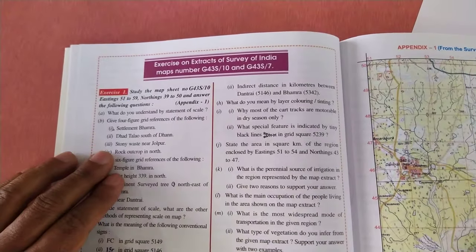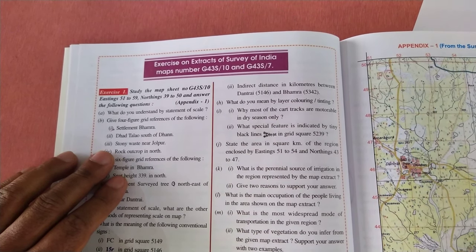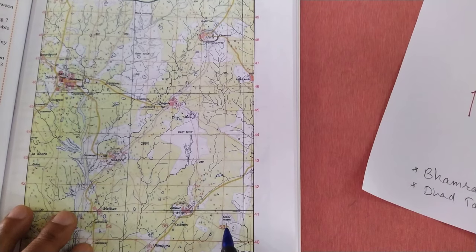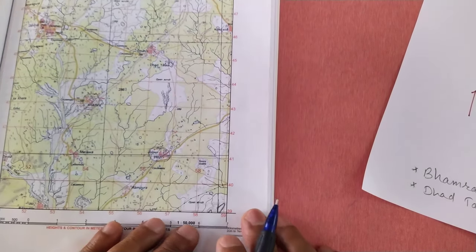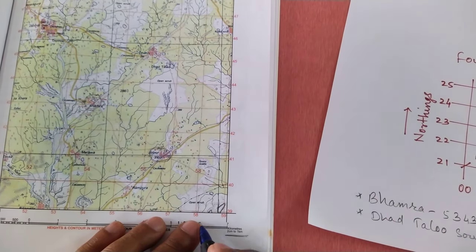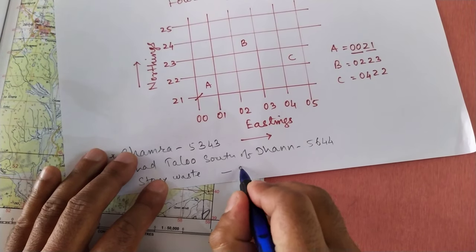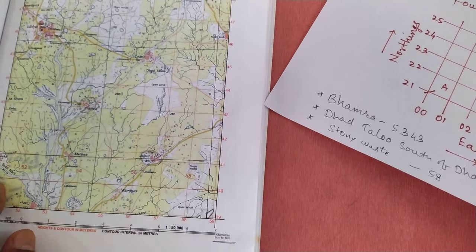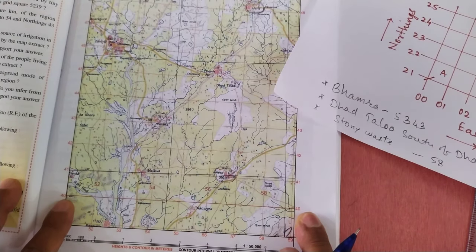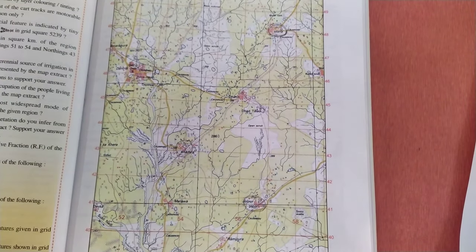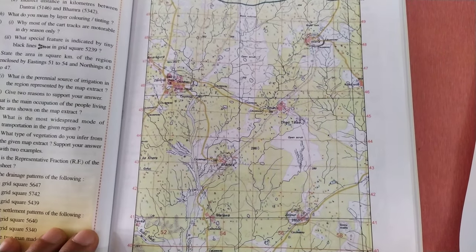Another example: Stoney Based near Jholpur. You have to search the settlement Jholpur — it is already here. Nearby, Stoney Based is mentioned at this location on the four-figure grid. The first Easting reading is 58, and the Northing will be 40. So likewise, any questions you are asked on the topographic sheet to find out or give the four-figure grid reference, you have to solve like this. Thank you.